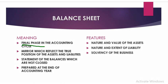So it is prepared on 31st December if the accounting period is a calendar year. If the accounting period starts from 1st April and ends on 31st March, then it is prepared on 31st March. It is just like a mirror which shows the position — how much assets we have, how much liabilities we have. It is the statement of the balances which are not closed.